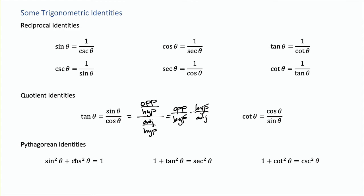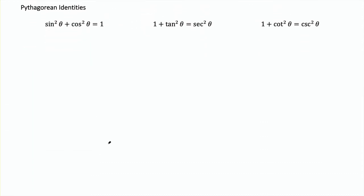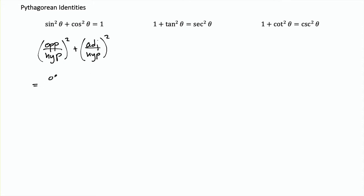Finally we have the Pythagorean identities, which come directly from the Pythagorean Theorem. Taking sine squared—opposite over hypotenuse, squared—plus cosine squared—adjacent over hypotenuse, squared—gives opposite squared plus adjacent squared, both over hypotenuse squared. By the Pythagorean Theorem, opposite squared plus adjacent squared equals the two legs squared, which equals c squared—that is, hypotenuse squared. So the numerator equals the denominator, giving 1.